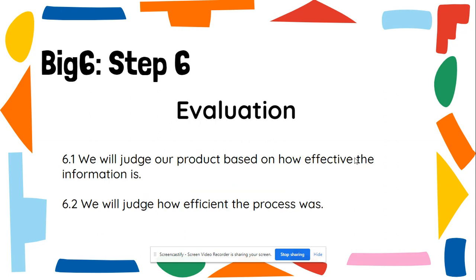And lastly, step six is evaluation. We will judge our product based on how effective the information was. We're going to look at a research assignment — whether it's a PowerPoint or a paper — and see if it was really effective, if you were able to gather all the information needed to solve that problem. Then you're going to judge the entire process: how efficient, how easy, and how manageable was all that information.